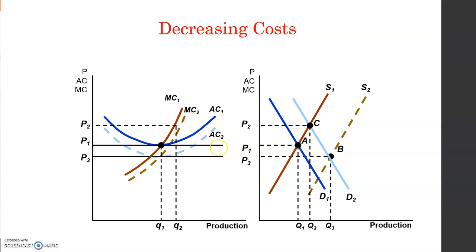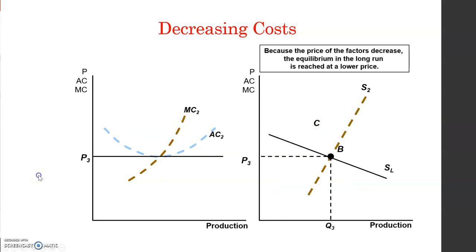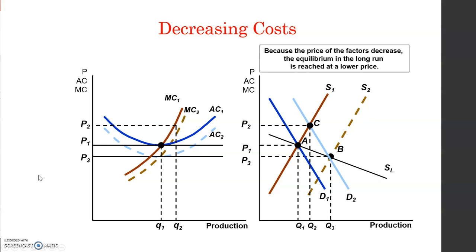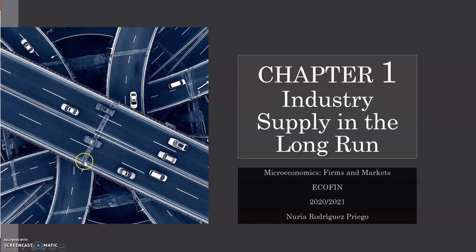When we find the new price where profits are again zero, we see that this price is lower than the initial price, because the cost functions have shifted down. The industry supply therefore has a negative slope in the long run — when demand moves, a new equilibrium is found at a lower price. This concludes the video.